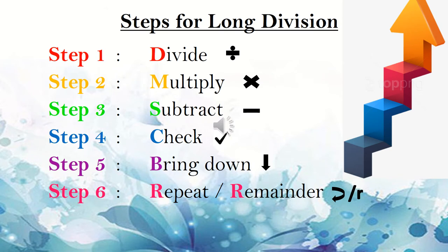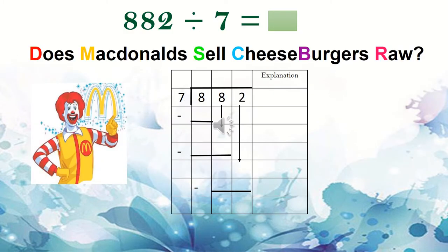Here are the steps for long division. Step 1, divide. Step 2, multiply. Step 3, subtract. Step 4, check. Step 5, bring down. Step 6, repeat or remainder. Now boys and girls, the slides to follow will have each step on each slide. Please look carefully at the color of the step and the color of the number. It will direct you as to where we are on the long division and help you understand the number.